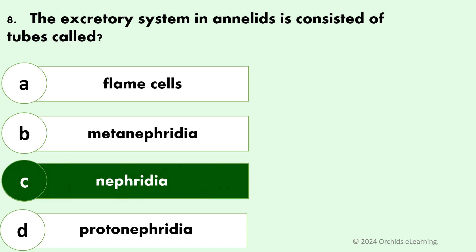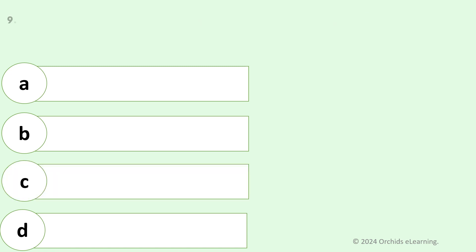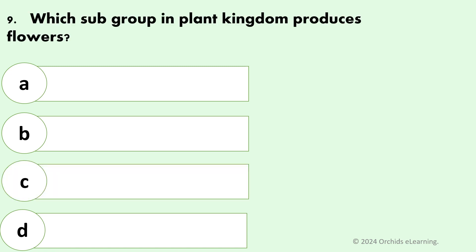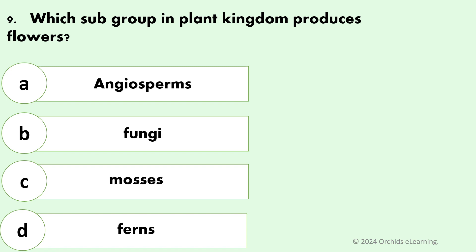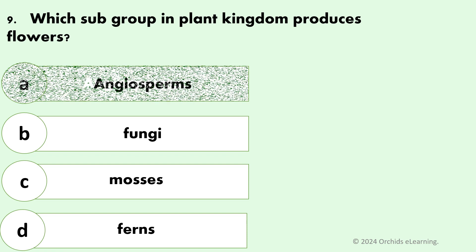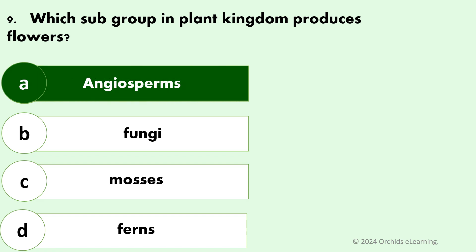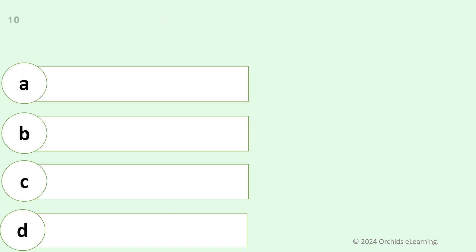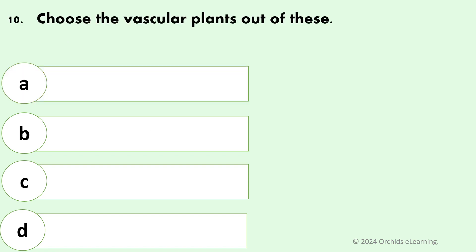Answer: C — Nephridia. Which subgroup in the plant kingdom produces flowers? Answer: A — Angiosperms. Choose the vascular plants out of these.